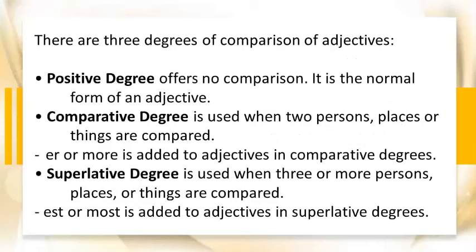There are three degrees of comparison of adjectives. Positive degree offers no comparison — it is the normal form of an adjective. Comparative degree is used when two persons, places, or things are compared; -er or more is added to adjectives in comparative degrees. Superlative degree is used when three or more persons, places, or things are compared; -est or most is added to adjectives in superlative degrees.